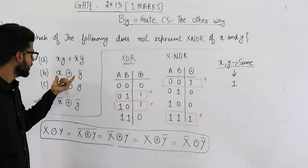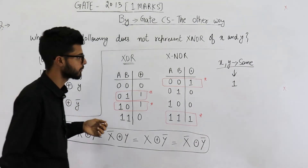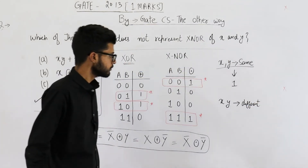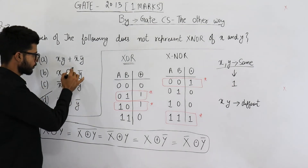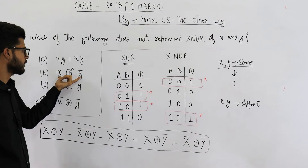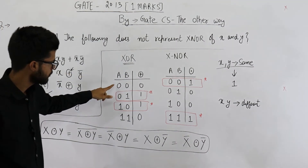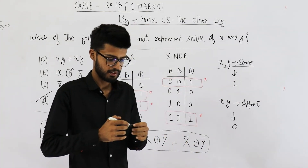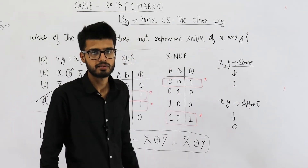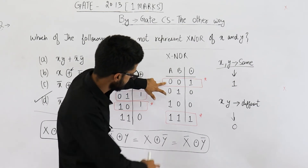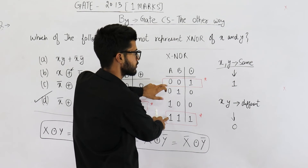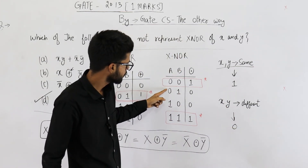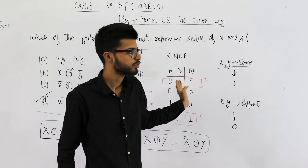Now let's analyze what happens if X and Y are different. If X and Y are different, X and Y complement will be same. So the inputs to this X-OR will be same, and on same inputs the output is going to be 0. Now: on same inputs you are getting 1 — X-NOR also outputs 1 on same inputs. On different inputs you are getting 0 — X-NOR also gives 0 on different inputs. So this one is an X-NOR gate. Similarly you can analyze option C. The answer is option D.